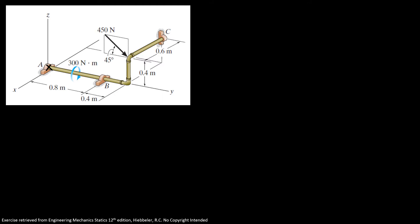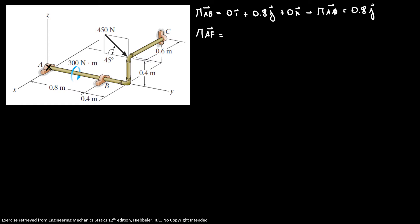Now we're going to find the distances between our points starting at point A, because I'm going to use these to find our moments. The distance from A to B in vector form is equal to 0 I plus 0.8 J plus 0 K, so the distance AB is equal to 0.8 J. The distance from A to the point of force F is 0 I plus 1.2 J plus 0.4 K. And my distance from A to C is equal to minus 0.6 I plus 1.2 J plus 0.4 K.